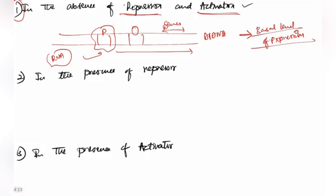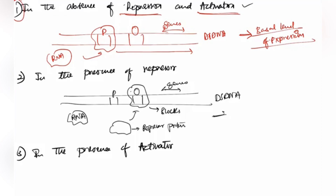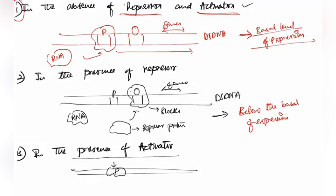In the second case, if a repressor protein is present, it will bind and block the operator site so that transcription will not take place. This is called below the basal level of expression. In the third case, if an activator is present, it brings changes at the promoter region making it comfortable for RNA polymerase to bind, and the genes get expressed. This is called above the basal level of expression.